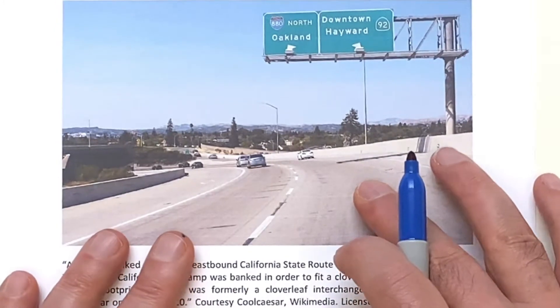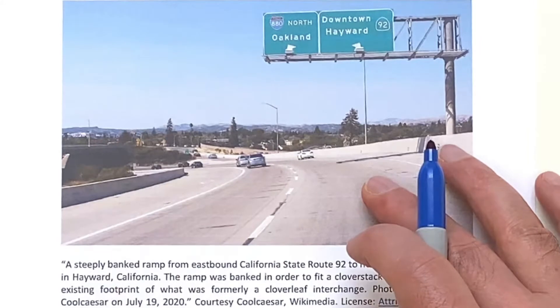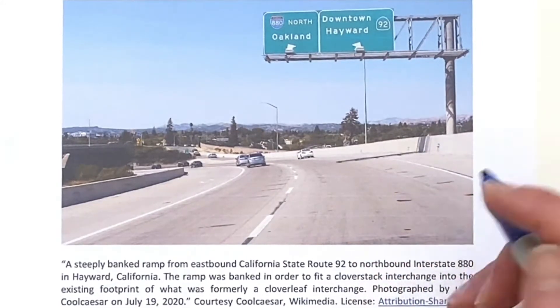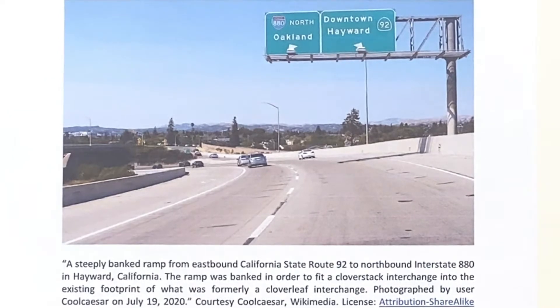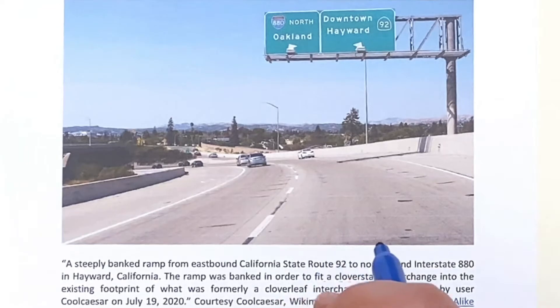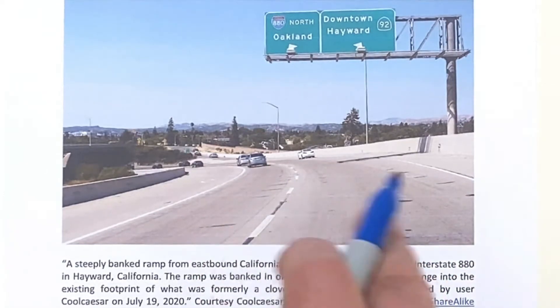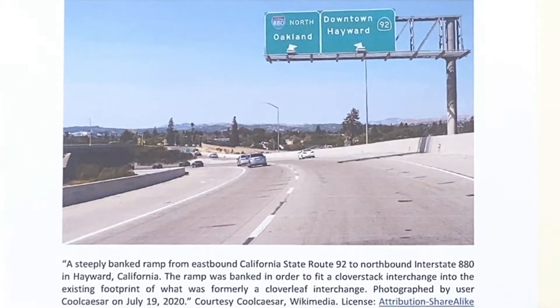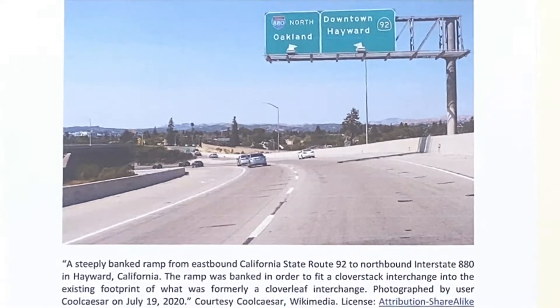Now the banked road helps out when you're making a turn. This one here comes from Cool Caesar, a Wikimedia, where the explanation is that the road was banked to fit a Cloverstack interchange into the existing footprint of what was formerly an interchange. So they were working with some road that was already built.